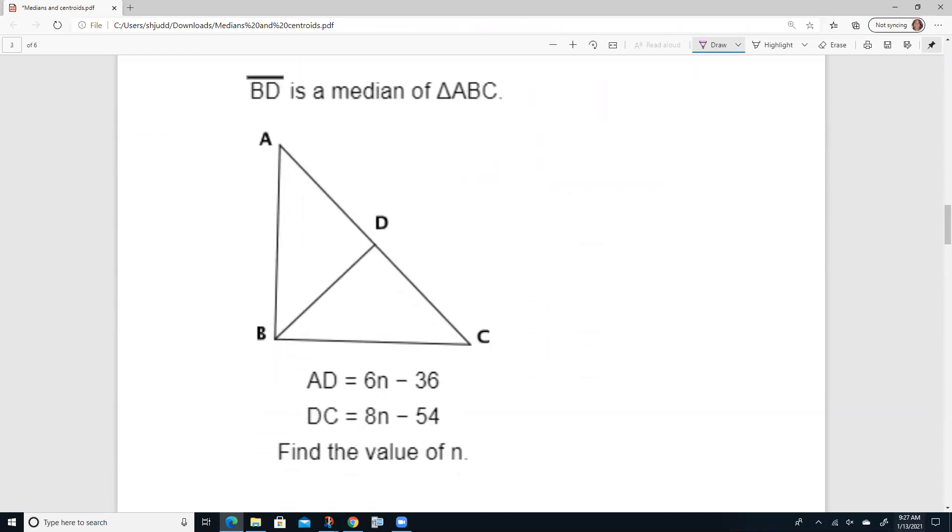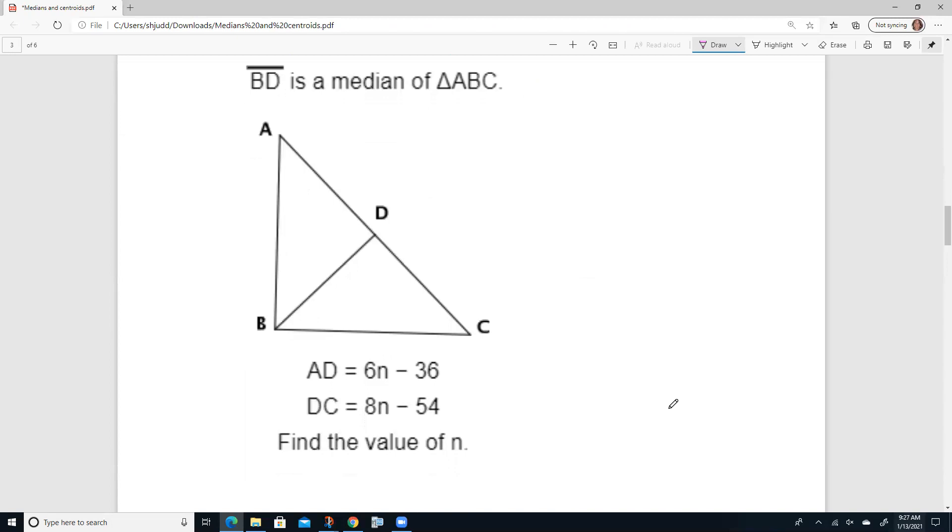This one tells us that BD is a median. So that means that this side is congruent to this side. We are told that from A to D is 6n minus 36, and from D to C is 8n minus 54.